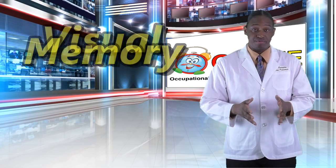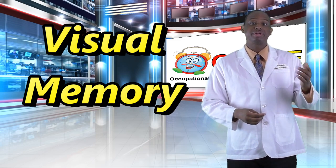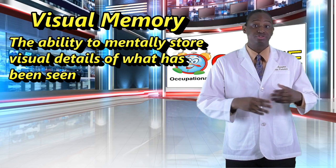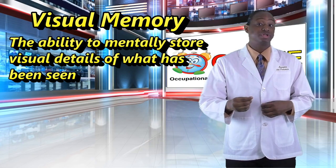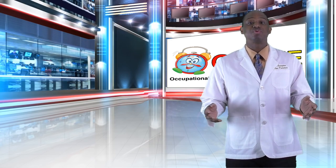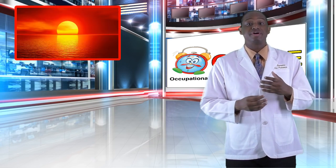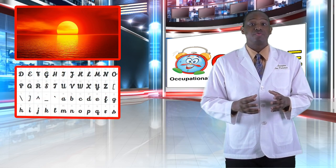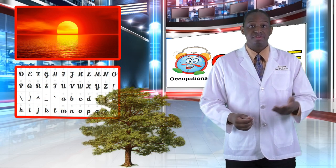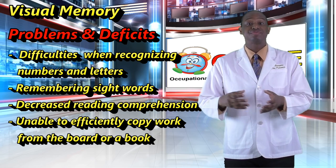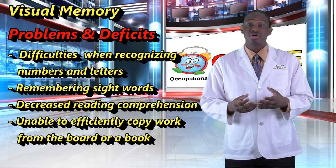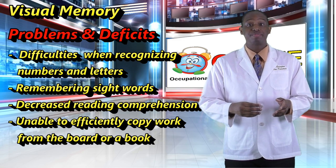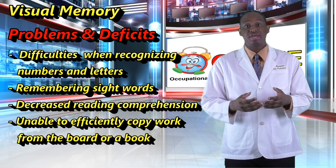Up next is visual memory. Visual memory is the ability to mentally store and recall visual details of what has been seen. For example, when you can recall the image of a sunset, the memory of a font type, or the remembrance of a tree's appearance — these are all instances of visual memory. Deficits in this area may cause difficulties recognizing numbers and letters, remembering sight words, reading comprehension, or being able to efficiently copy work from the board or a book in a timely manner.